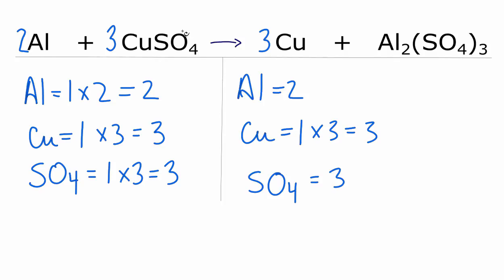The trick here, if you have an SO4 here, and then here, you can treat those as just one item. This is Dr. B with the balanced equation for Al plus CuSO4 yields Cu plus Al2(SO4)3. Thanks for watchin'.